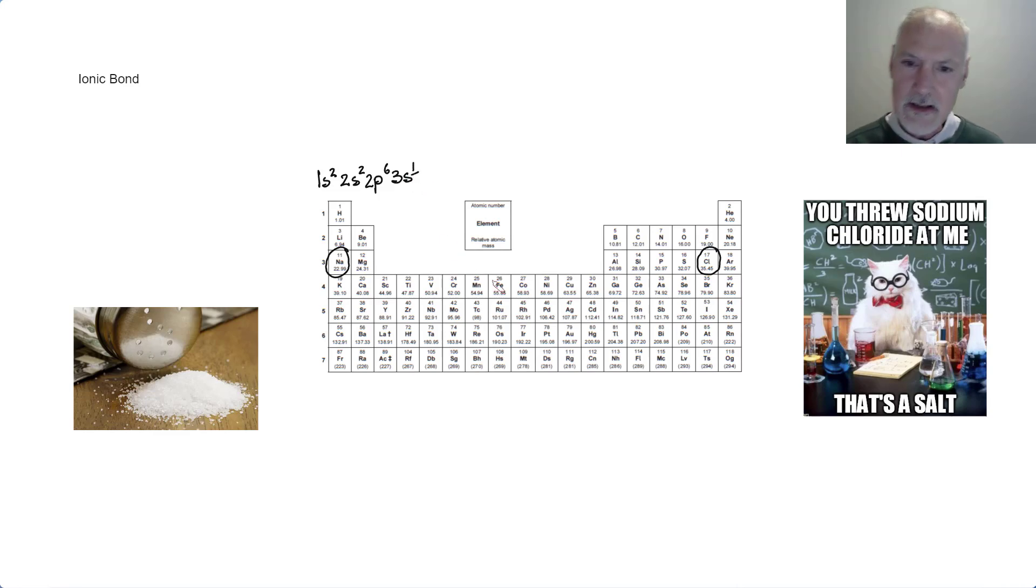That one electron that sodium has in its outermost energy level is very weakly held. Sodium has a low ionization energy, and that electron can be easily removed, leaving sodium with a +1 charge. That is one of the characteristics of ionic bonds. Metallic elements tend to lose electrons and develop a positive charge, and they're called cations. You can remember this because the T in cations looks like a positive sign.